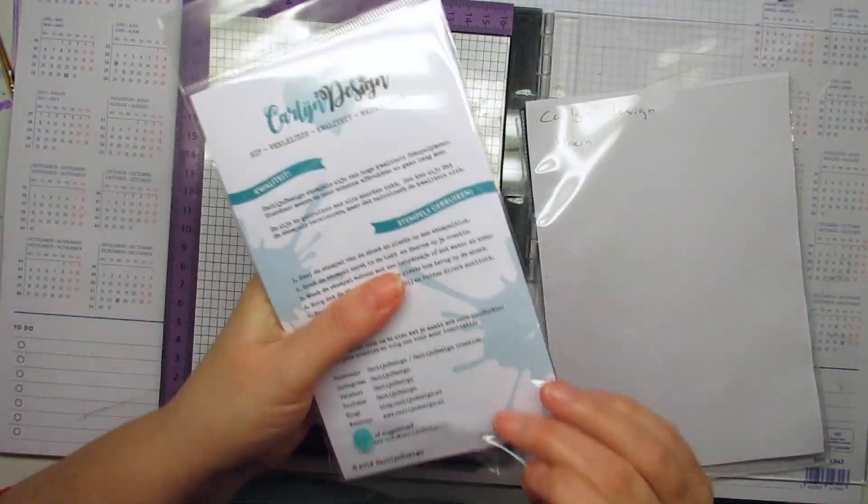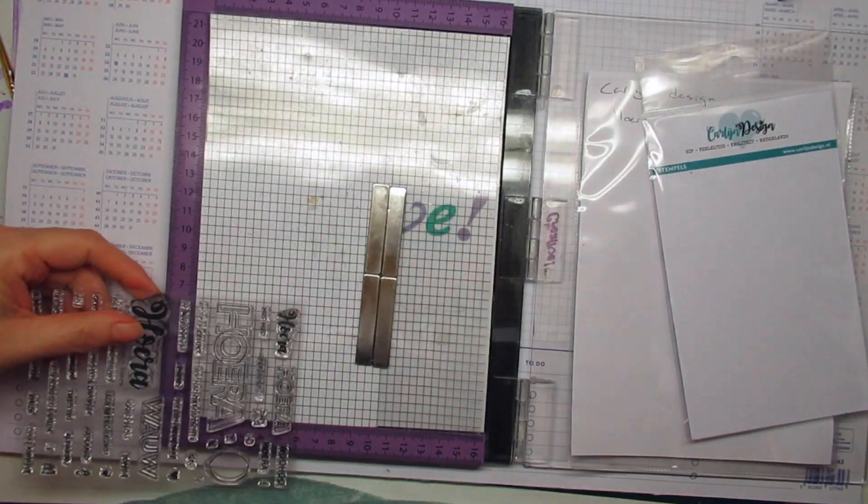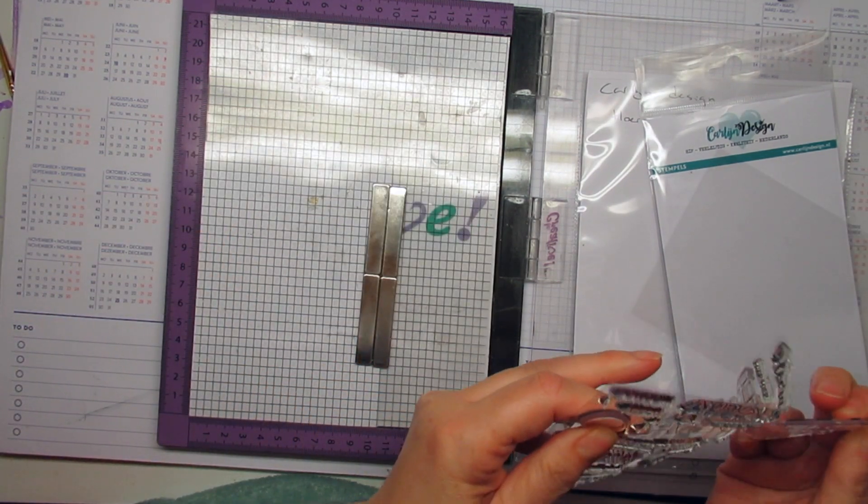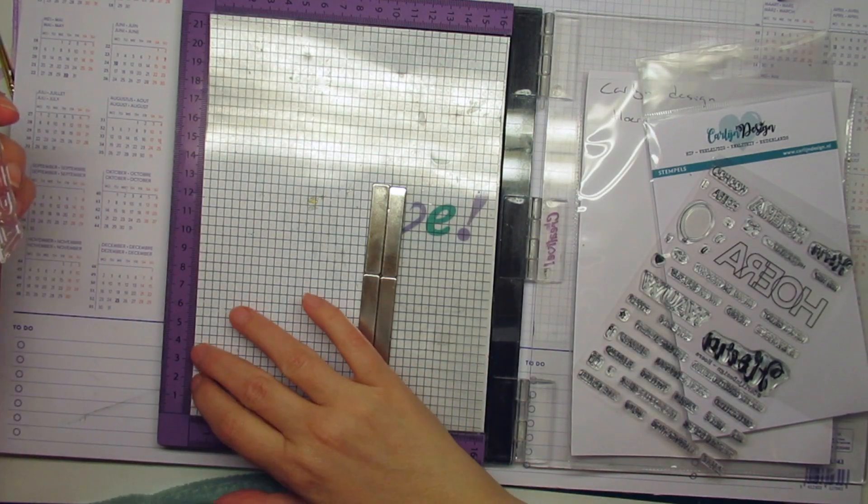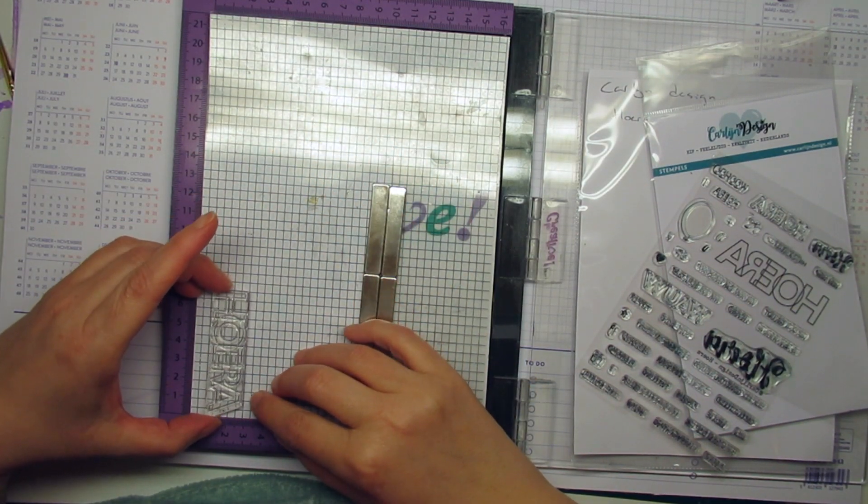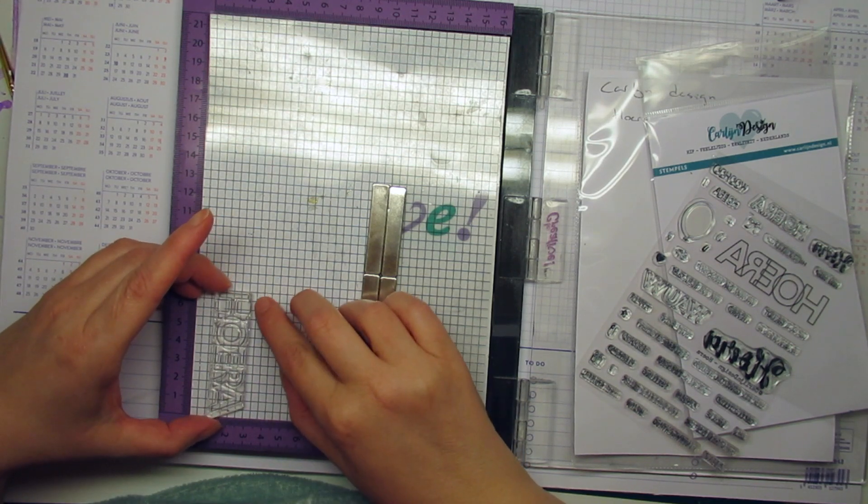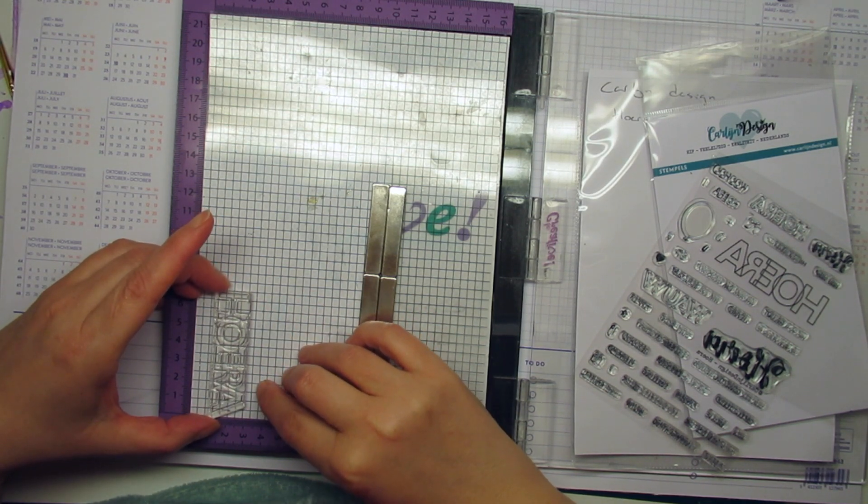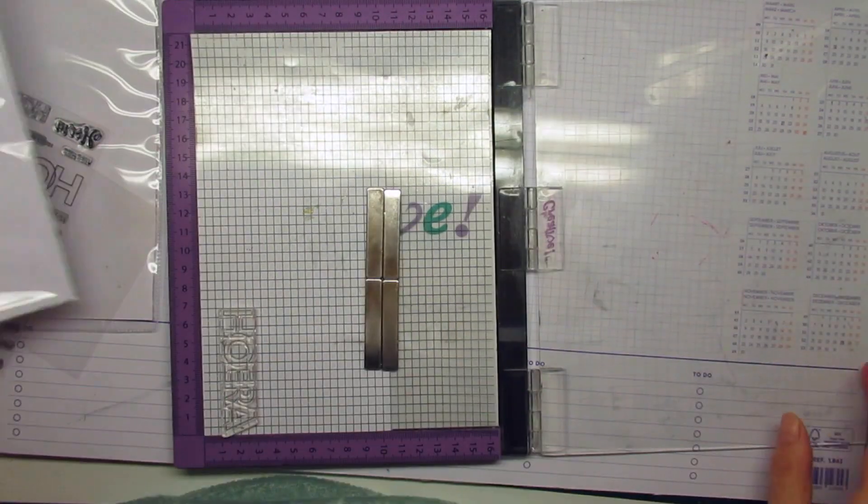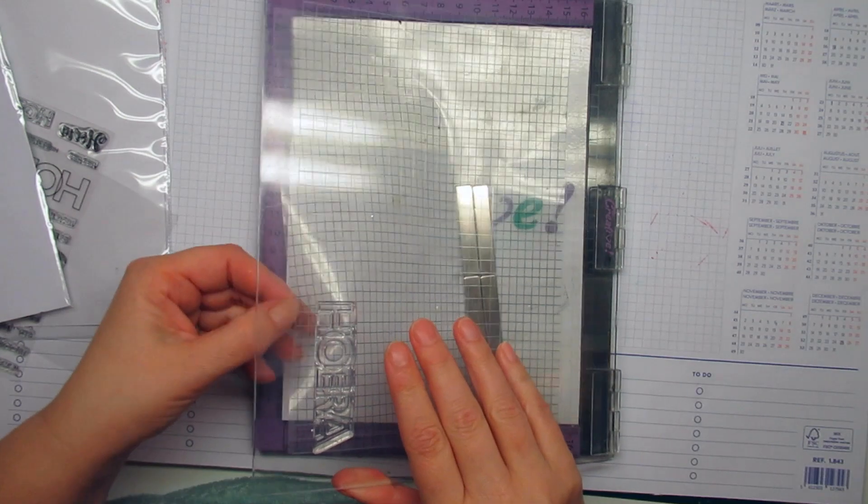I'm using the outline Hoorah in the corner and I'm also using my grid to make sure it's straight and these are photopolymer stamps so you can look through them and make sure your grid is really aligned well and also putting it very much on the edge of the card.